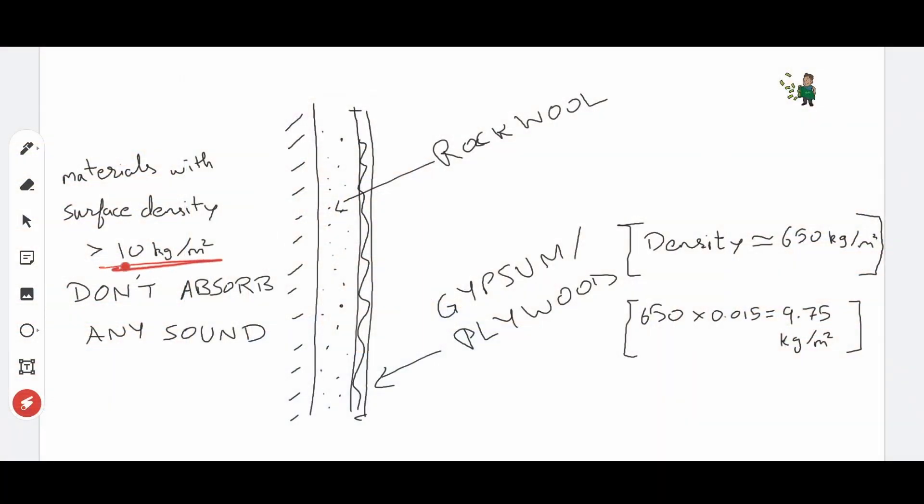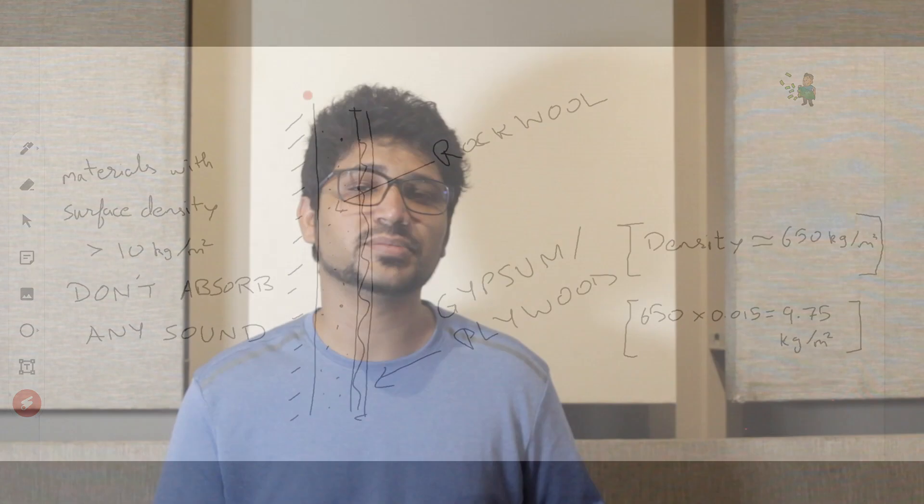Materials with a surface density which is greater than 10 kg per meter square have negligible sound attenuation. Plywood has a density of around 650 kg per meter cube, which means unless the plywood is below 15 mm, it will not even begin to absorb anything.